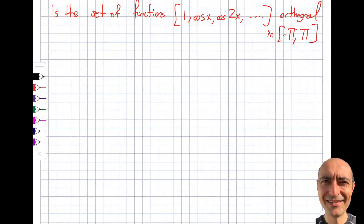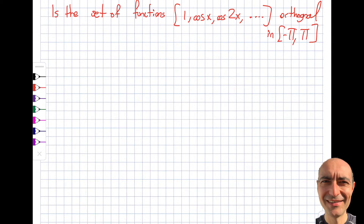Here's a fairly straightforward question. I give you a set of functions: 1, which is cosine of 0, then cosine x, cosine 2x, cosine 3x, all the way to infinity. Is this set of functions orthogonal? The interval I give you is from minus pi to pi. I will also look at the norm while I'm at it.